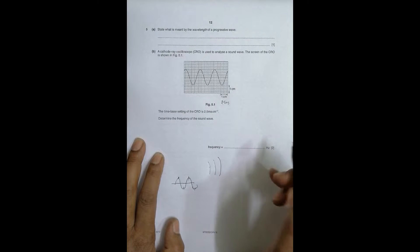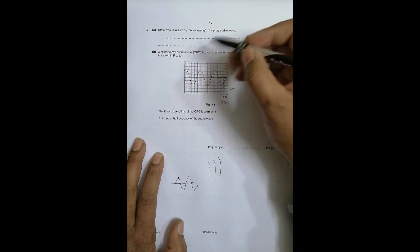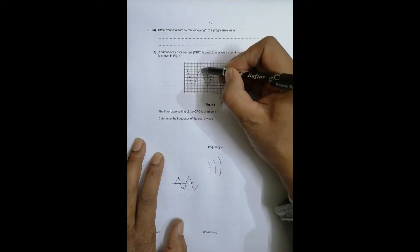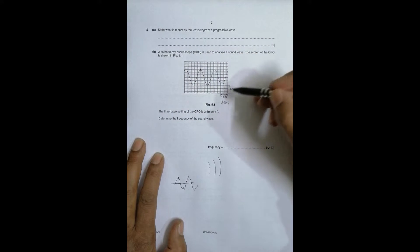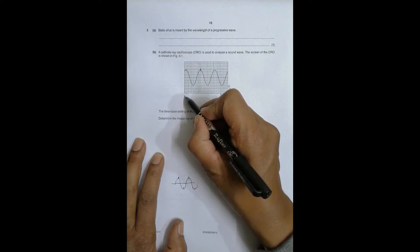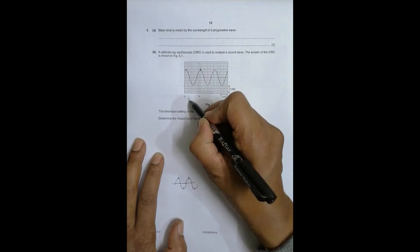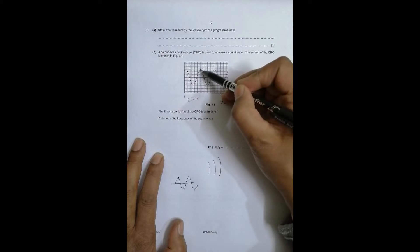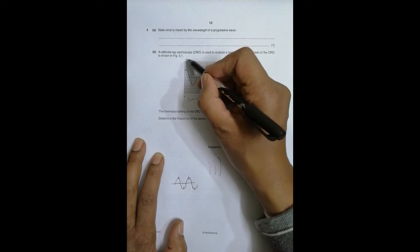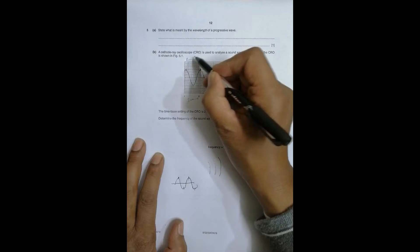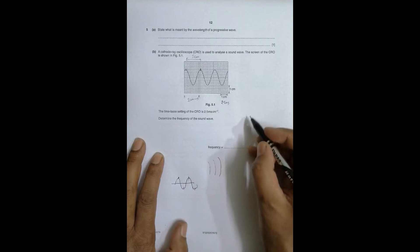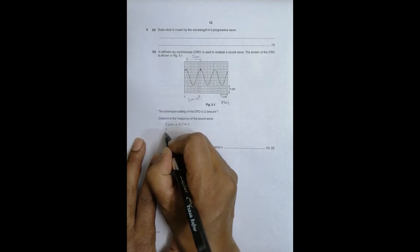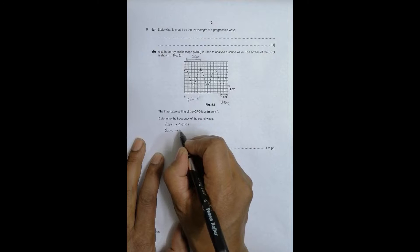Frequency equals the reciprocal of the time period, so first we find the time period. Measuring from one point on the wave to the equivalent point one cycle later, that distance is two centimeters. Since one centimeter equals 2.5 milliseconds, two centimeters equals 2 × 2.5 = 5.0 milliseconds.